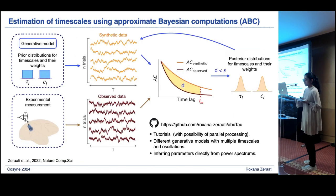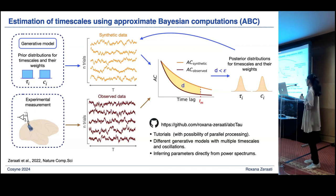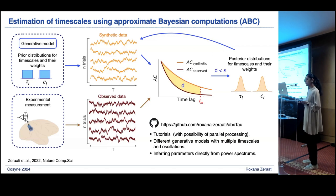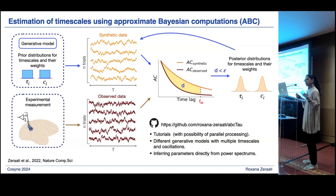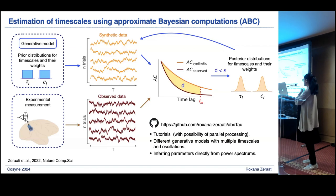In neuroscience experiments we don't always have long trials, so we developed a Bayesian method that relies on generative models to estimate timescales. We used this method on a subset of our data to confirm that the trial durations we have are long enough to reliably estimate timescales, which is the case. For the rest of the study, all results I'll show use simple exponential fitting rather than this Bayesian method.